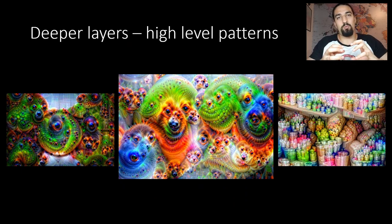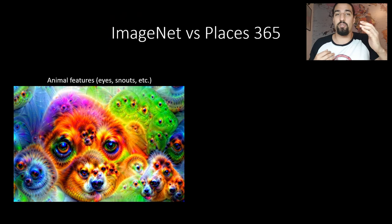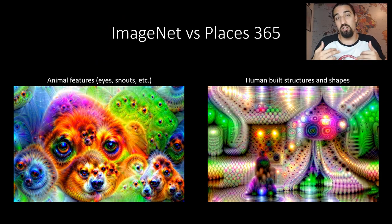Now I already mentioned ImageNet and MIT Places 365 but those are not the only datasets out there obviously. You can use some other ones but I use these two and these two are really common in the DeepDream community.